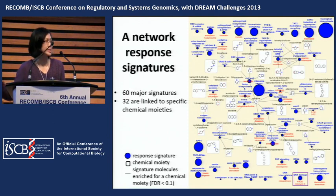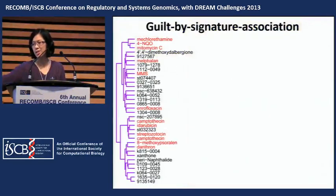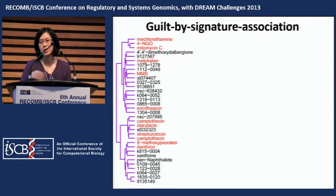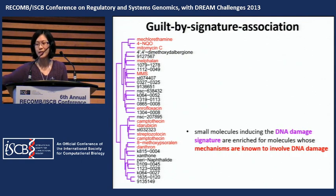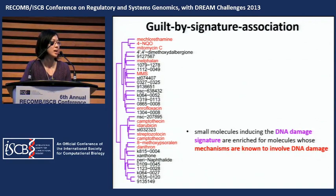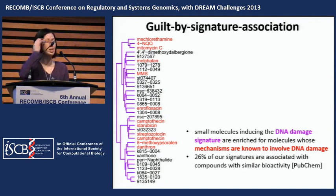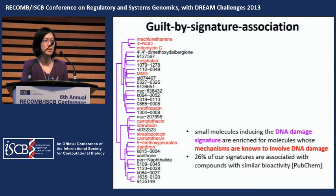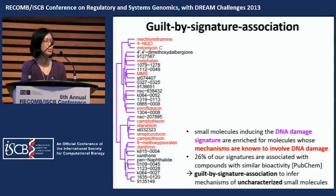Taking a closer look at the DNA damage signature, the compounds that induce this signature are enriched for compounds whose known mechanisms involve DNA damage. In fact, for 26% of our signatures we observe something similar, where the associated compounds share similar bioactivity. This implies we can use a guilt-by-signature-association approach to infer the mechanisms of uncharacterized small molecules.